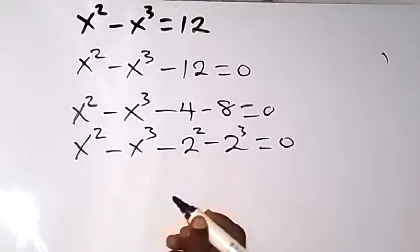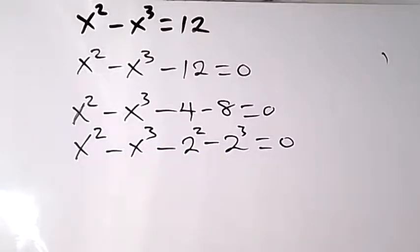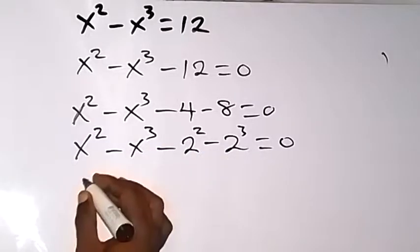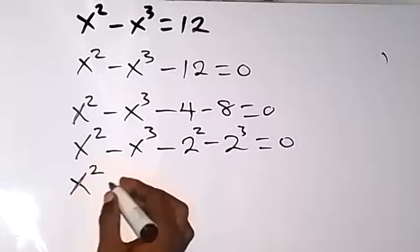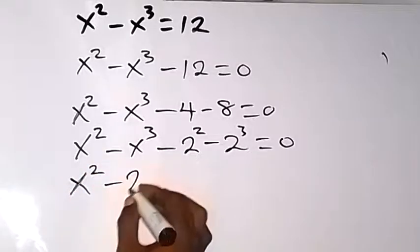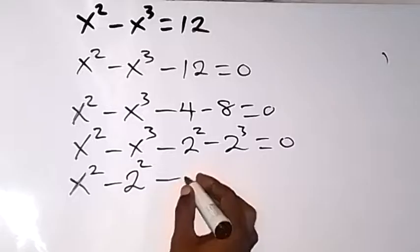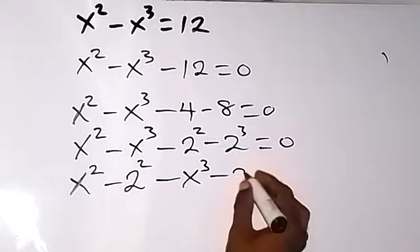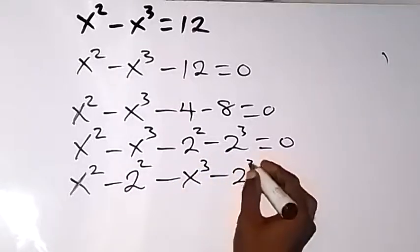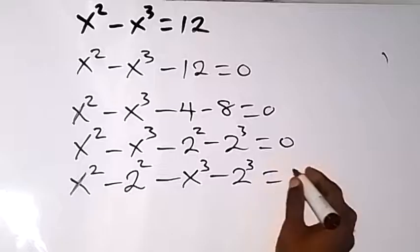Then let's collect the ones with x squared to one side and the ones with x cubed to the other side, such that this gives us x squared minus 2 squared, then minus x cubed minus 2 cubed, which is equal to 0.